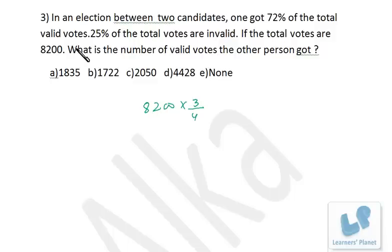He has got 72% of the valid votes, that means the other person got 28% of the valid votes. Now this is 28% of the valid votes, so that's 82 into 21.